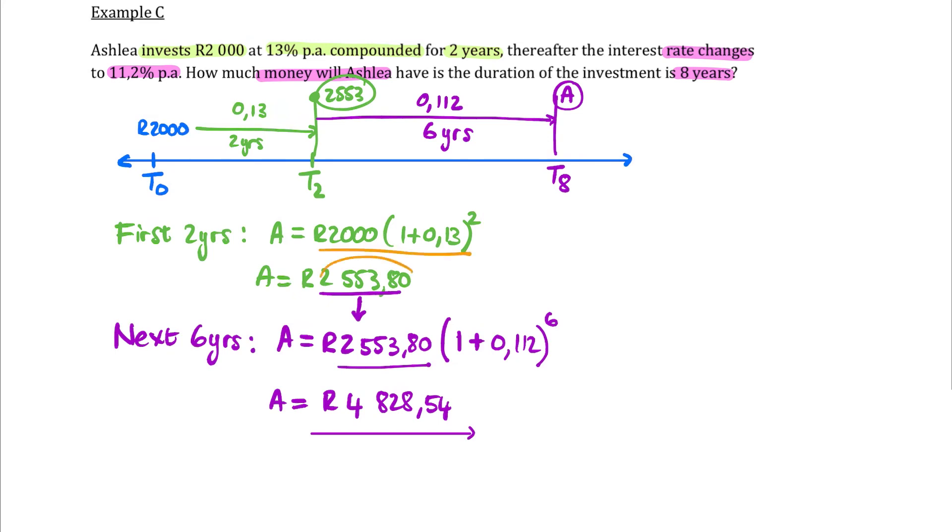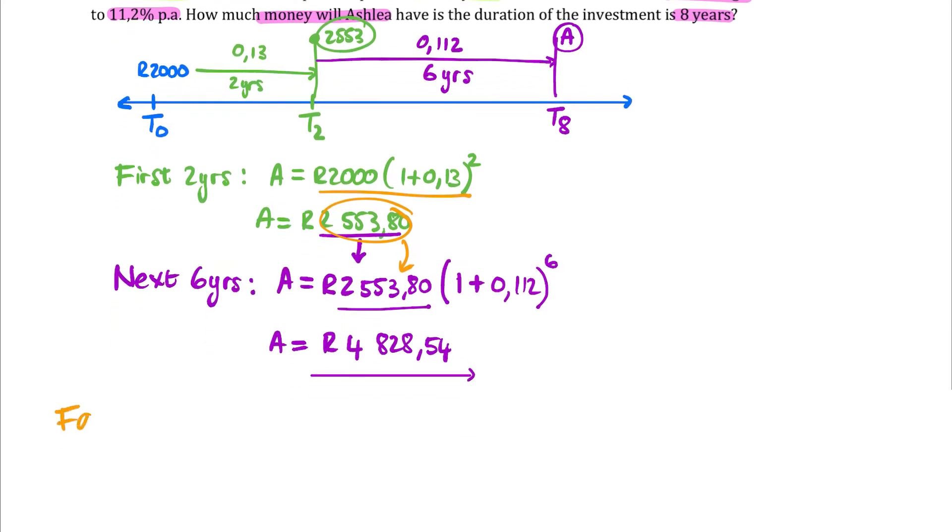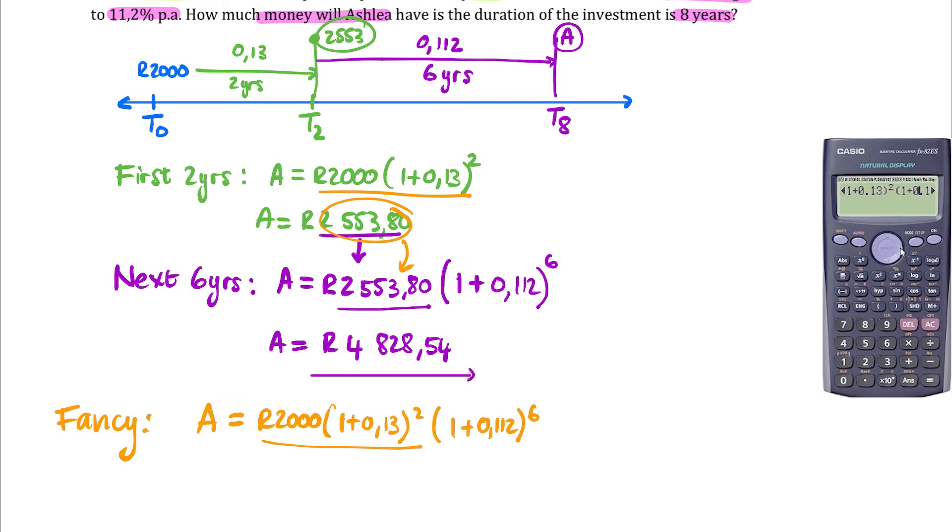So in one fancy, one step way we can do this, we could say, her final value is going to be the 2,000 Rand, 1 plus 0.13 for two years. And then this becomes the P-value for the other remaining six years, my interest rate of six. And so we've got this whole long calculation here. It can't even fit on the screen. But if we push equals, we see that we get exactly the same answer as we did doing it in two steps. So you don't have to do it in the short way. And shortcuts are always dangerous if they lead us to make mistakes. But if what I did here was made perfect sense to you, then you're welcome to do it.